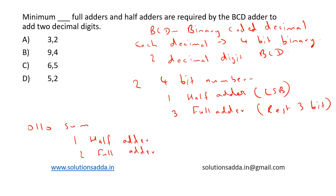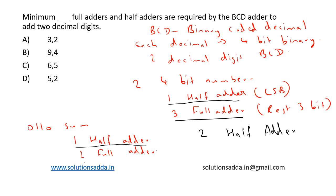This is because the LSB bit of 0110 is always zero, so there is no need for an adder to handle the LSBs. The total count is: half adders — one from the first stage and one from the correction stage — giving two half adders. Full adders: three plus two equals five full adders.